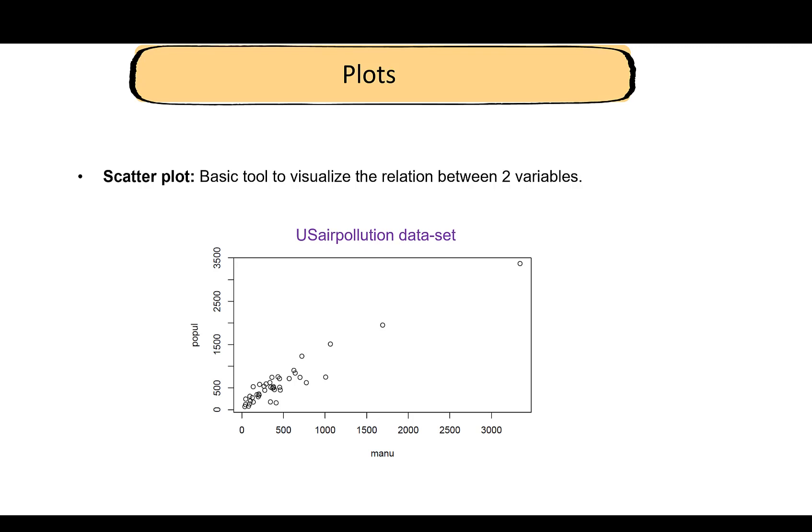You can see that this is a scatter plot. We can see that there is a linear relation between the two variables and we can also see that there are some potential outliers in this data set. This is just a relationship between two variables, but this data set has many other variables.